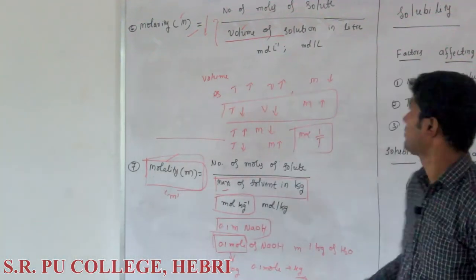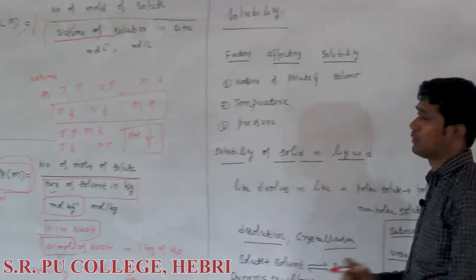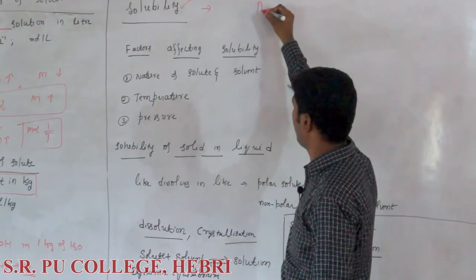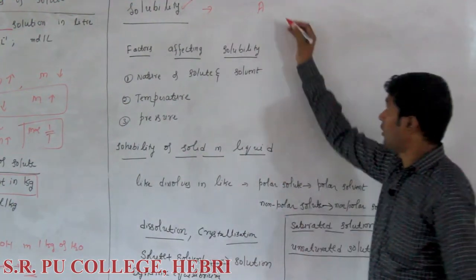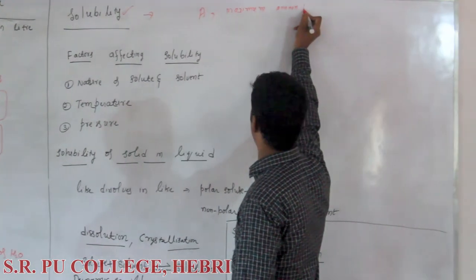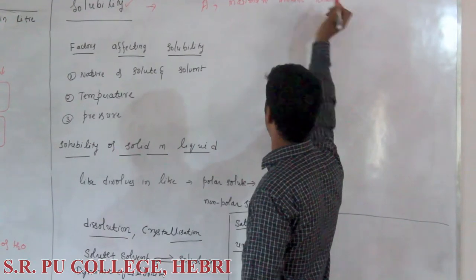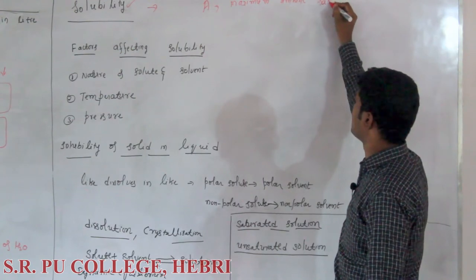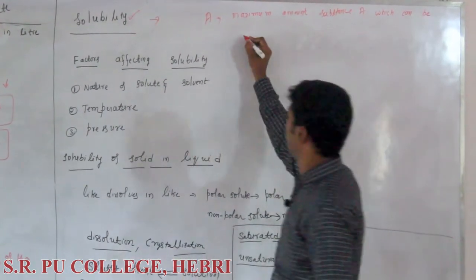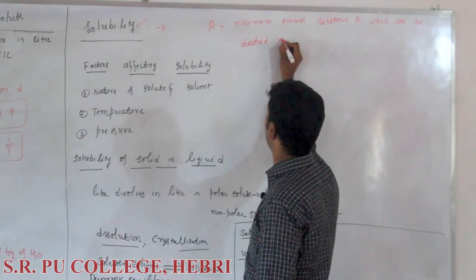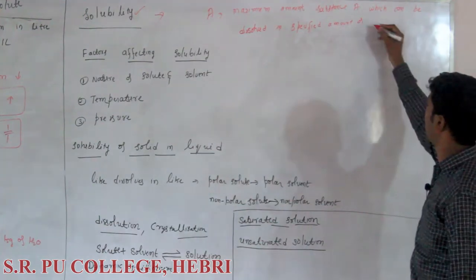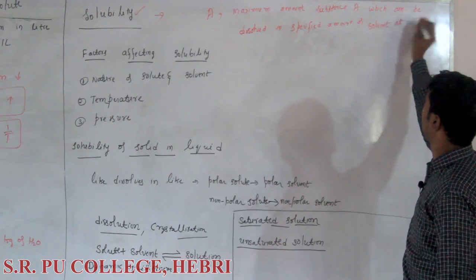The next topic after concentration term is solubility of a solute. Solubility means the maximum amount of a substance — for example, substance A — which can be dissolved in a specified amount of solvent at a specified temperature.